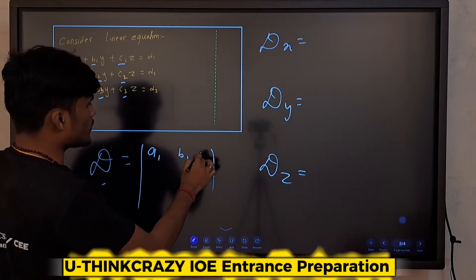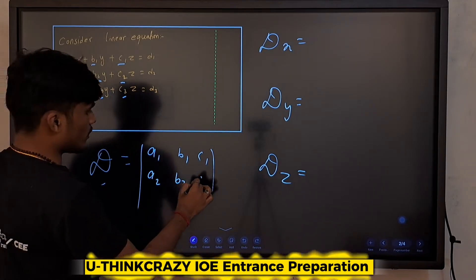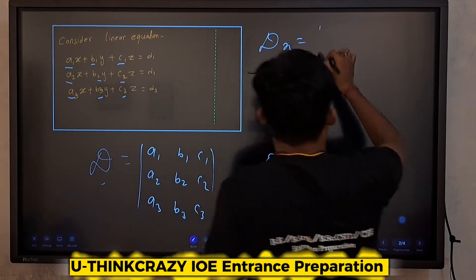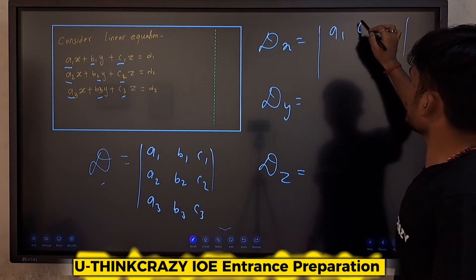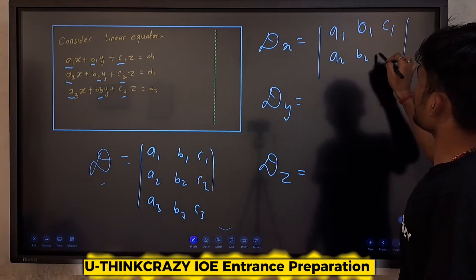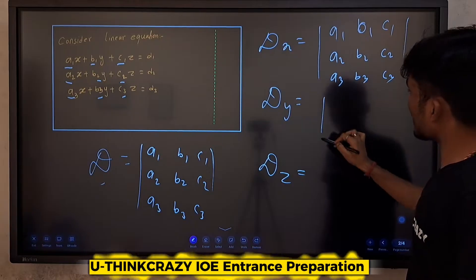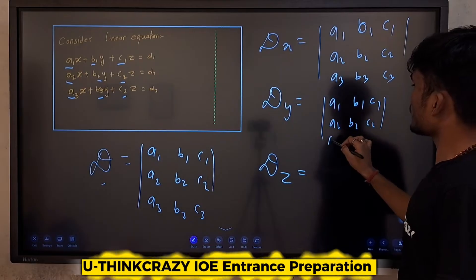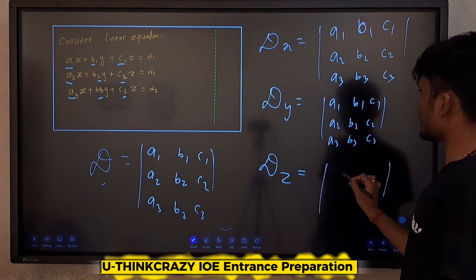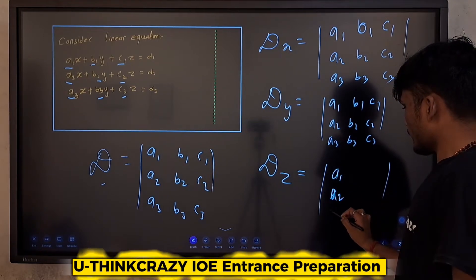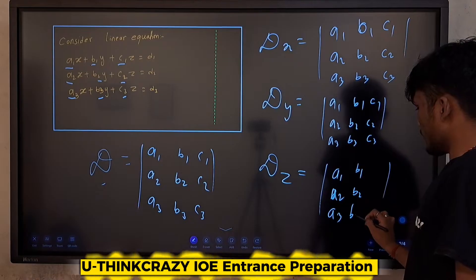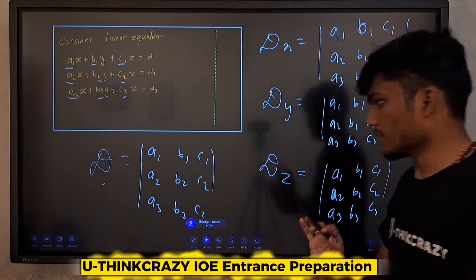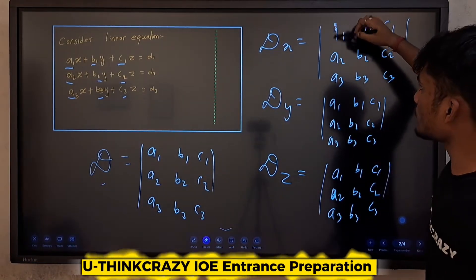a2, b2, c2, a3, b3, c3 — write all these points here as well. Same writing: a1, b1, c1, a2, b2, c2, a3, b3, c3. Again here the same: a1, b1, c1, a2, b2, c2, a3, b3, c3. Then again same: a1, a2, a3, b1, b2, b3, c1, c2, c3. Simple rule. For Dx, fill in the x-coefficients.